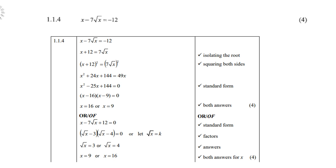Let's look at 1.1.4: x - 7√x = -12. Now here we're dealing with irrational equations, so the idea is to have the root alone on either the left hand side or the right hand side. So in this case we take -7√x to the right hand side and we take -12 to the left hand side. That is step number one. Then we square both sides to get rid of the root.